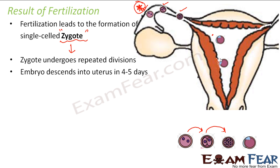Now you know the difference between a zygote, embryo, and fetus. A zygote after many divisions gets implanted in the uterus and is then known as an embryo. An embryo in its advanced stages of development is known as a fetus. The question now is: how does the fetus receive nutrition? Who provides food and nourishment for the growth of that embryo?